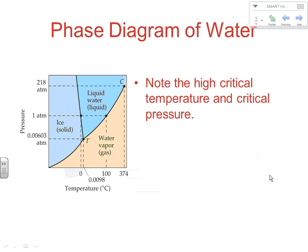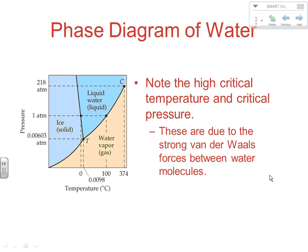One thing to point out on a phase diagram: notice that water has a very high critical temperature and pressure. That's because there are very strong intermolecular forces — Van der Waals forces — between water molecules. Water molecules are neutral substances, but water has strong hydrogen bonding. Because of that, it has a very high critical temperature and pressure. Remember, all of these things we've been talking about with liquids — boiling point, melting point, surface tension, capillary action, vapor pressure, and critical temperature and pressure — they're all tied to intermolecular forces.